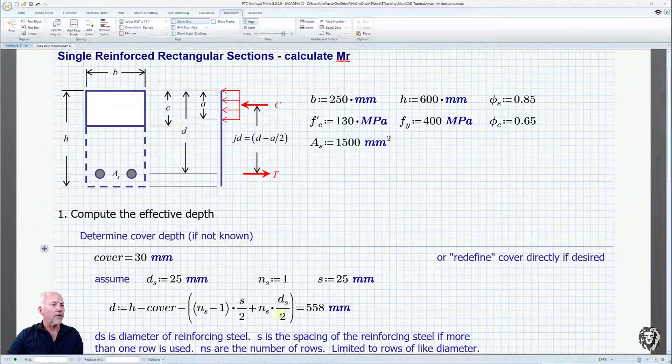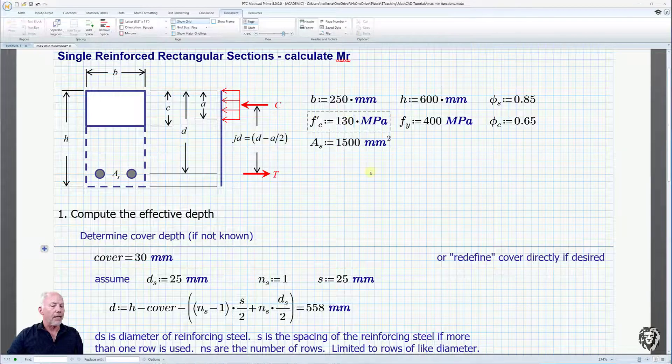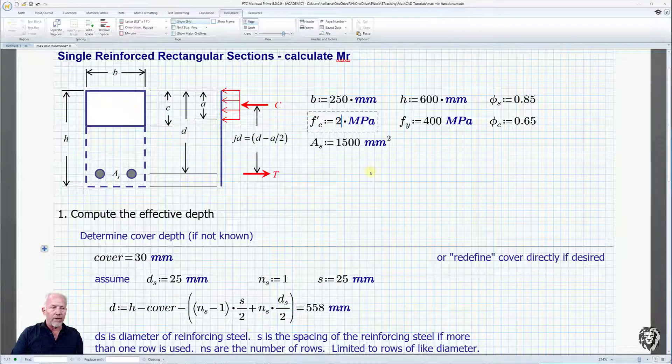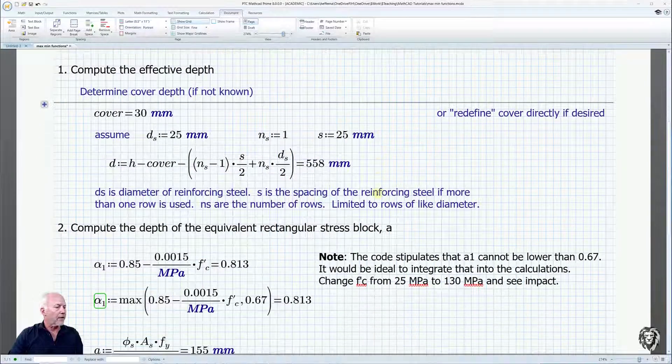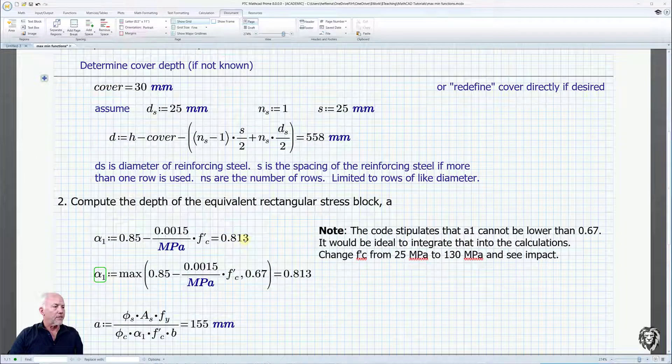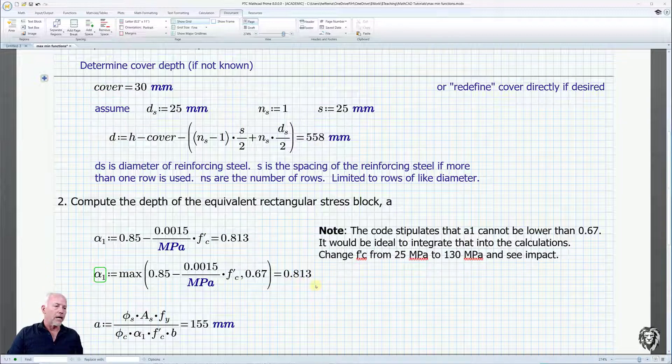So let's go back and change our f prime c back up to 25 megapascals. We can scroll down and we see it calculates 0.813 and it returns that value. Whereas when it was 130, it returned the maximum of 0.67.